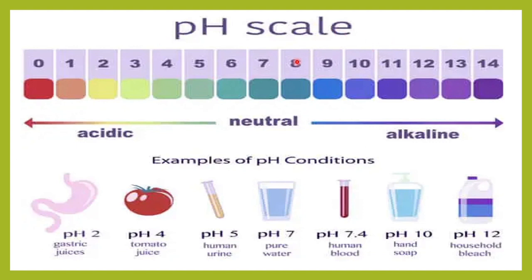On the pH scale, the neutral area is around 7, the acidic region is below 7, and the alkaline region is above 7. Urine is always a bit acidic. Gastric juices have a pH of around 2, so they are very acidic. Human blood has a pH of 7.4, which is slightly alkaline. Household bleach has a pH of 12, so it is more alkaline.